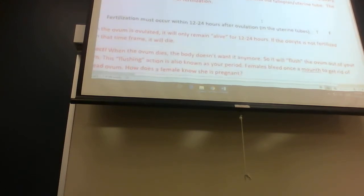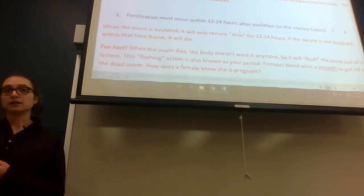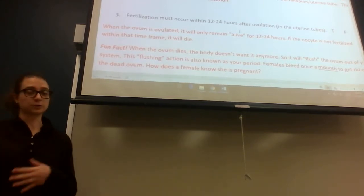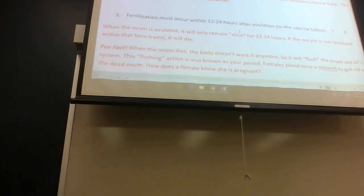As far as fertilization goes, it has to happen within 12 to 24 hours. And if that doesn't happen, then the egg will die. If the egg isn't fertilized within 12 to 24 hours, then you have your period because it's trying to get rid of all that. Your body prepares the uterus to become vascularized, prepares nutrients. So if there was a baby, then it could live. But if it's not fertilized, then the egg dies.